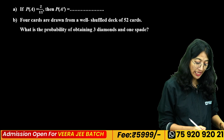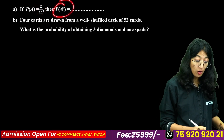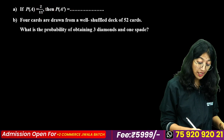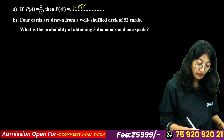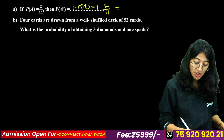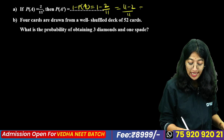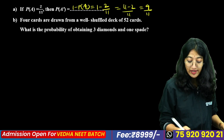If P(A) = 2/11, then P(A complement) = 1 – P(A) = 1 – 2/11 = (11 – 2)/11 = 9/11.